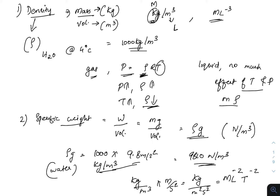The next one is specific weight. Weight by volume is specific weight. Weight is represented as mg — mass times acceleration due to gravity — divided by volume. Since m/volume is density ρ, specific weight equals ρg. For water, ρ is 1000 kg/m³ and g is 9.8 m/s², so ρg equals 9810 newton per meter cube.